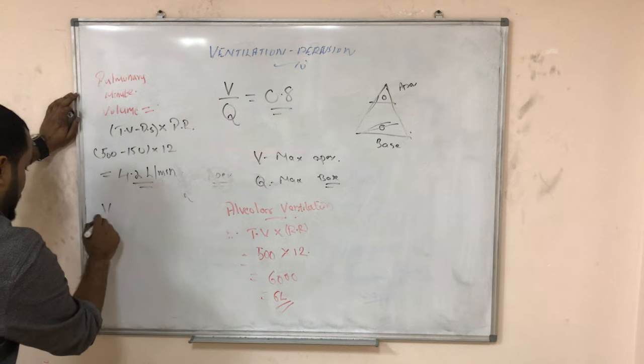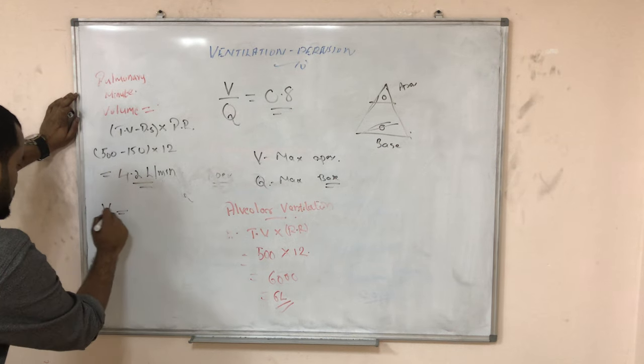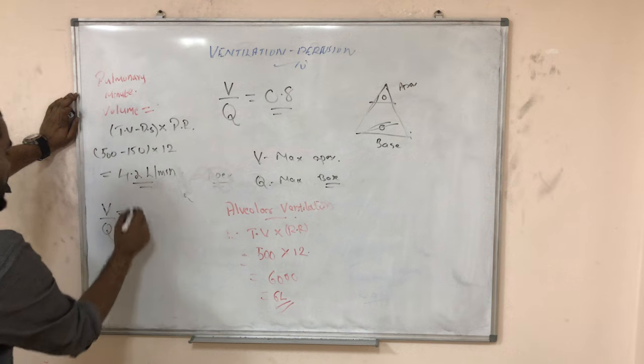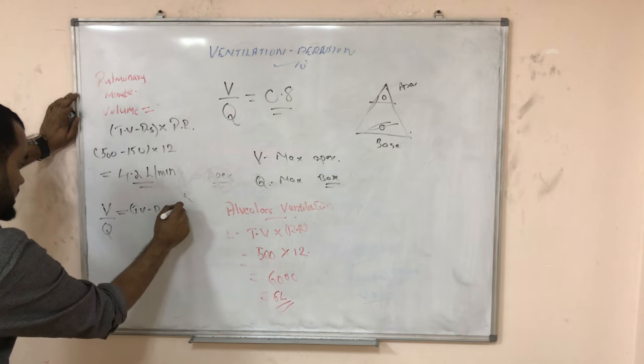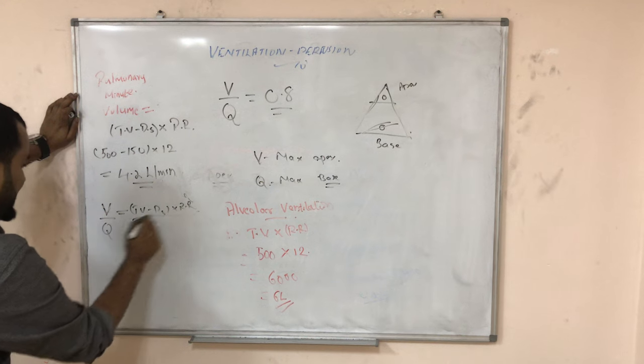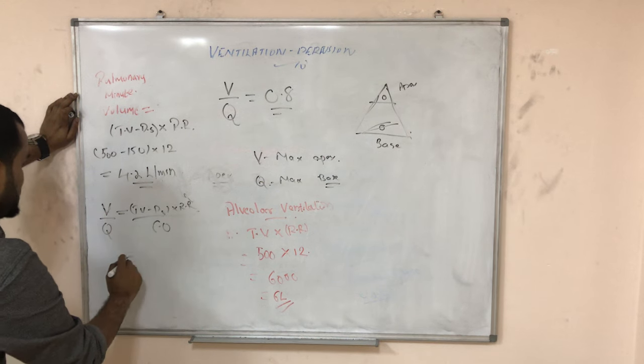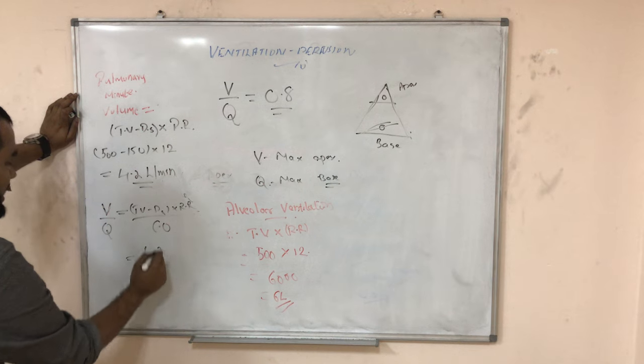Now let me equate this with V by perfusion. So here V is equal to TV minus dead space into RR. And perfusion we can take it as cardiac output, so it is already 4.2.